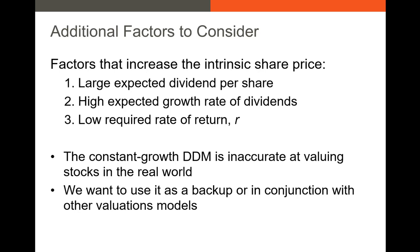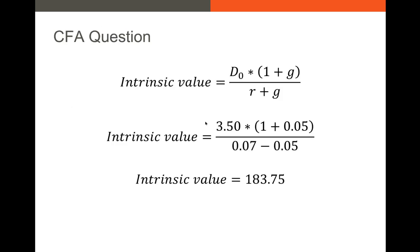Now, a couple of additional factors to consider. What will increase the value of a stock when we use this DDM? Higher dividends per share leads to a higher intrinsic share price. A high growth rate in dividends will increase our intrinsic value. And a low required rate of return R will increase our intrinsic value. The reason is that a very small number for R makes the denominator smaller, which makes the entire right-hand side component bigger.